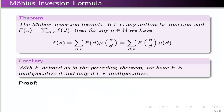Here is the theorem we just proved — the Möbius inversion formula. If f is any arithmetic function and capital F is defined to be the sum over d dividing n of f of d, then for any natural number n, little f evaluated at n is the sum over the divisors of n of capital F of d times the Möbius function evaluated at n over d. Equivalently, you can write it as capital F of n over d times the Möbius function of d. Since we're summing over divisor pairs, the order doesn't matter.